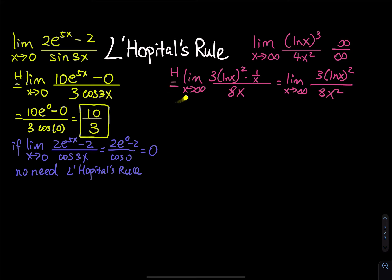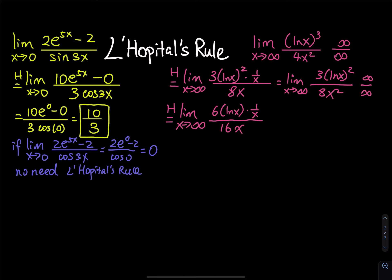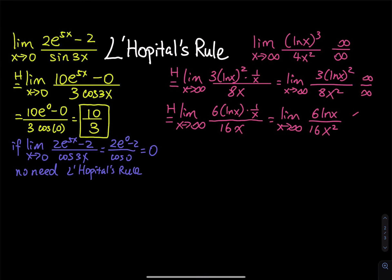Always clean up the terms before you apply the rule. For the second L'Hôpital application: bring the 2 down to get 6 ln(x), then the derivative of ln(x) is 1 over x, and the derivative of the denominator is 16x. Carry the 1 over x down, giving the limit as x approaches infinity of 6 ln(x) divided by 16x squared. Plugging in infinity still gives infinity over infinity, so we apply L'Hôpital's rule one more time.